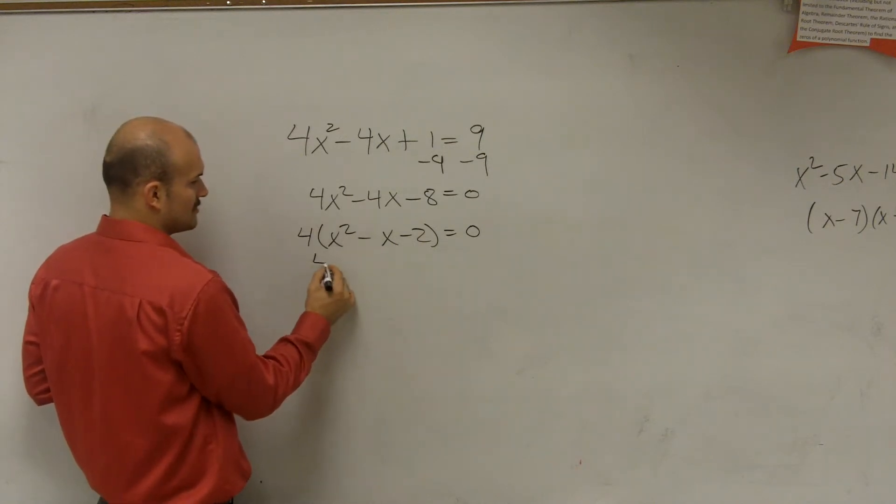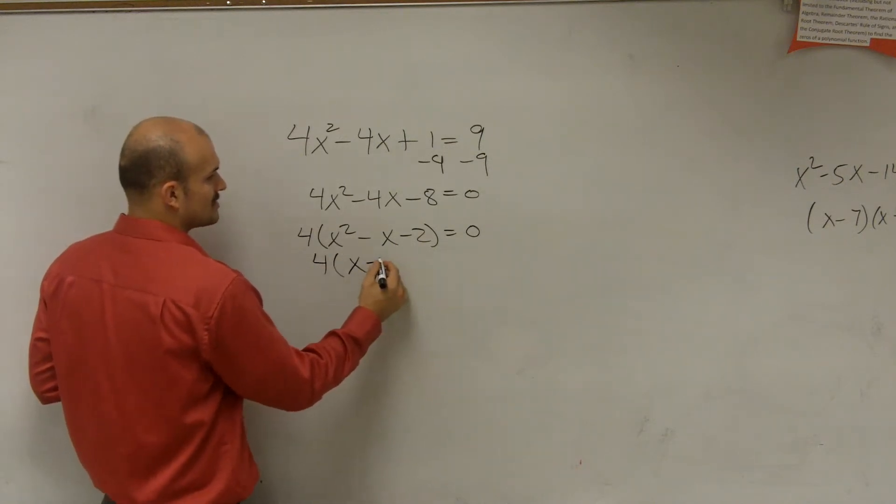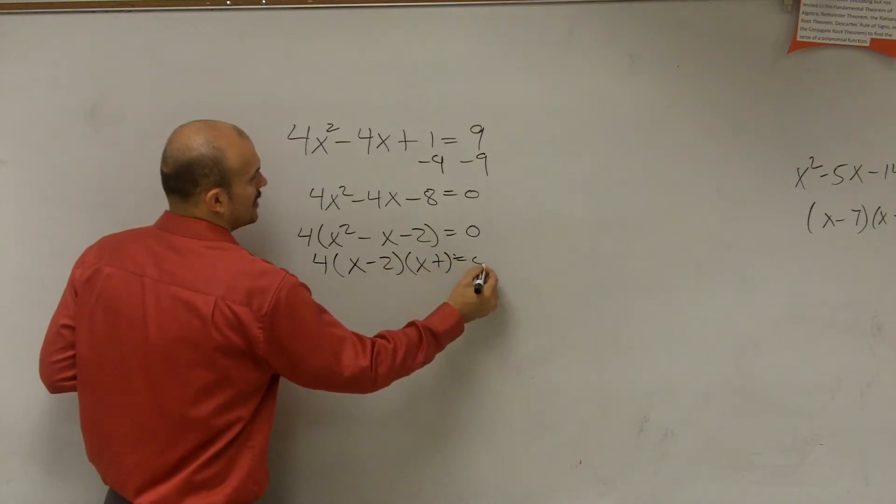Then you just go and factor this. So 4 times x minus 2 times x plus 1 equals 0.